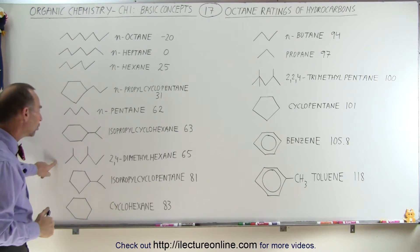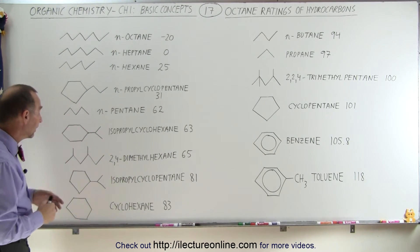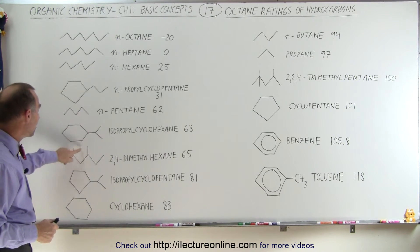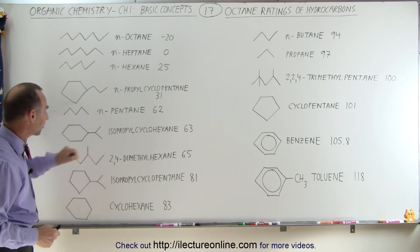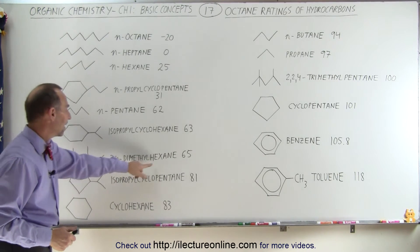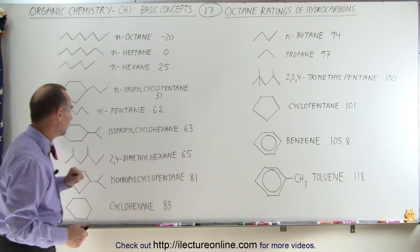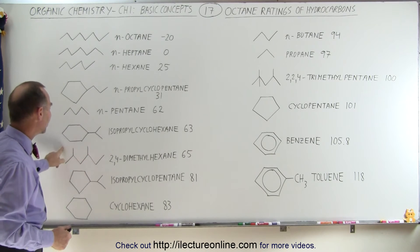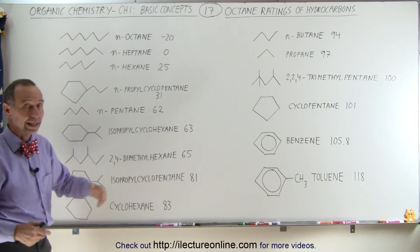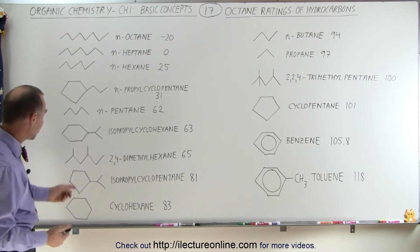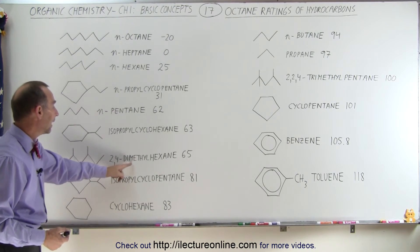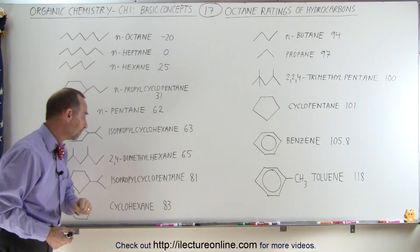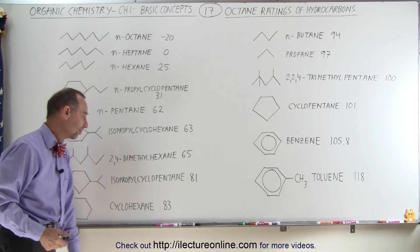The next molecule again is fairly familiar. It has two methyl attachments to a structure that has one, two, three, four, five, six carbons, so we see hexane in there and two methyls — so dimethyl — and the points of attachment are the second and the fourth carbon atom, so it's 2,4-dimethyl hexane. It has an octane rating of 65.